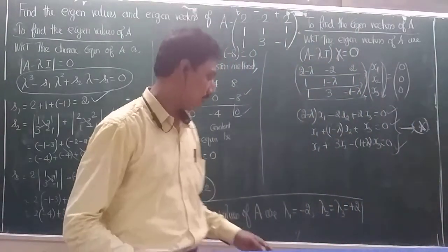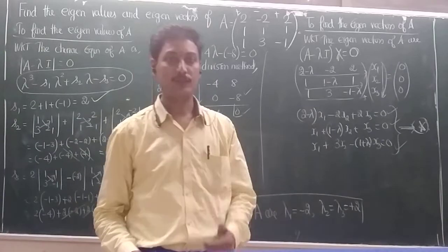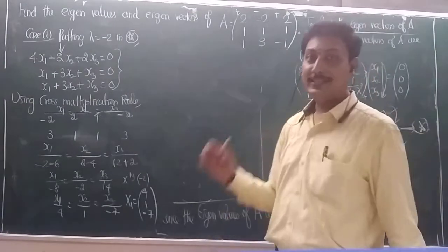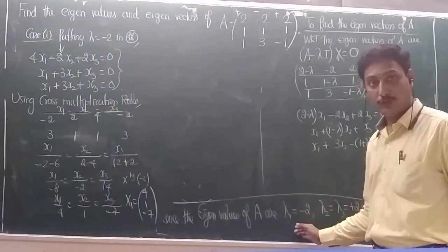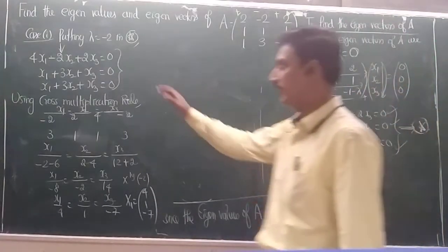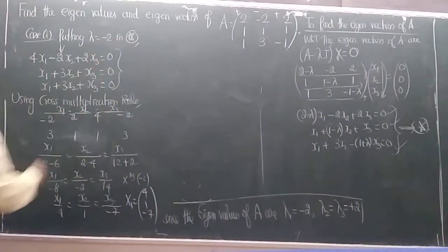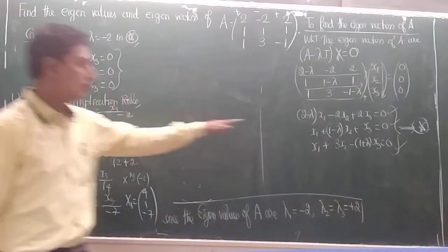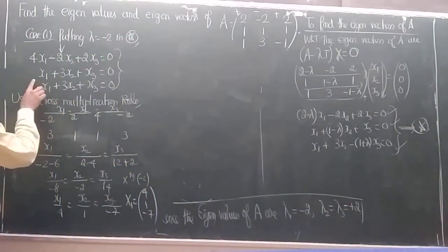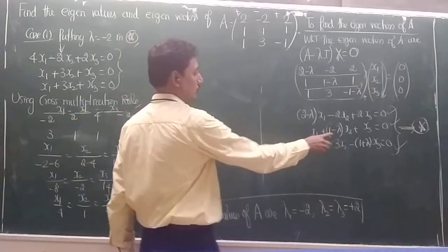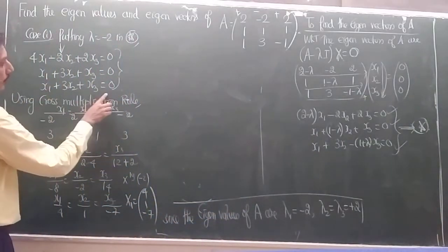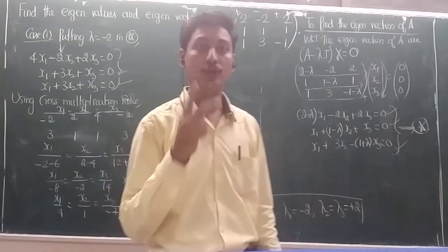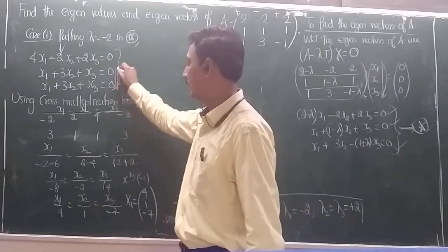Case 1: substituting λ = −2 into the star equation. We get: (2−(−2))x₁ − 2x₂ + 2x₃ = 0, which is 4x₁ − 2x₂ + 2x₃ = 0. The second equation: x₁ + (1−(−2))x₂ + x₃ = 0, giving x₁ + 3x₂ + x₃ = 0. The third equation turns out to be the same as the second. So equations 2 and 3 are similar — we only have two distinct equations.